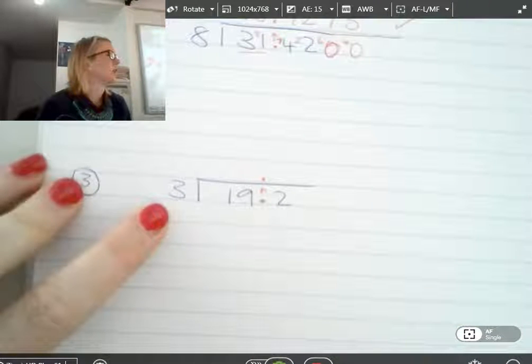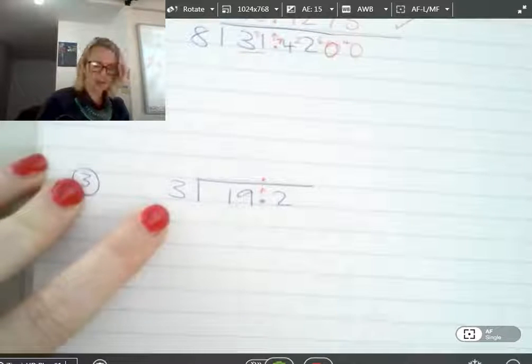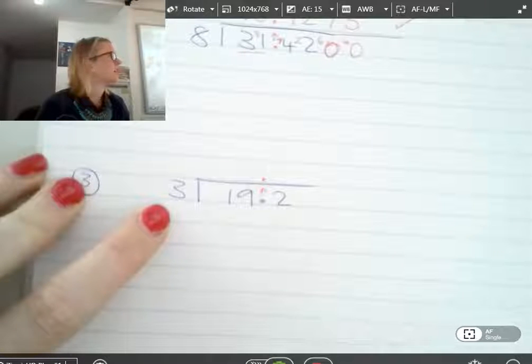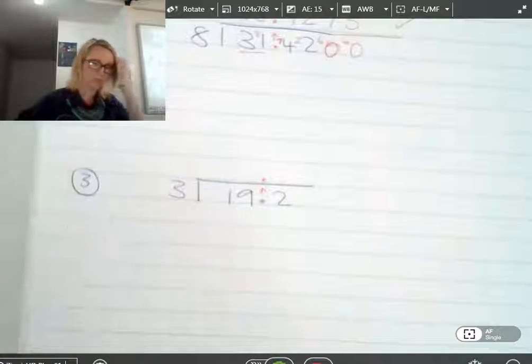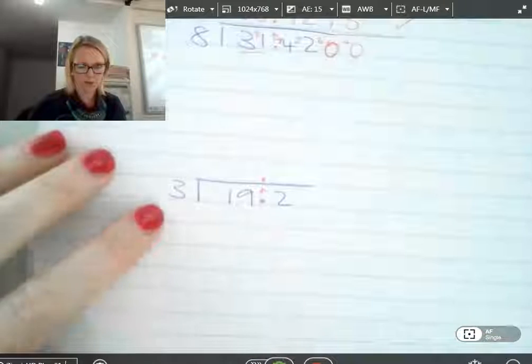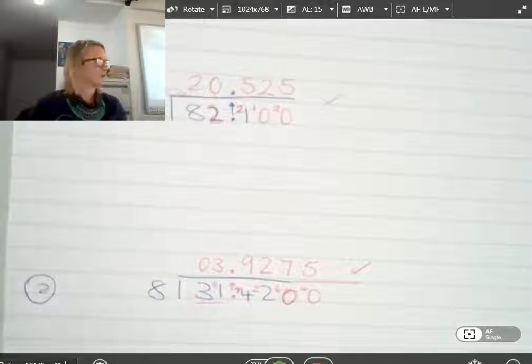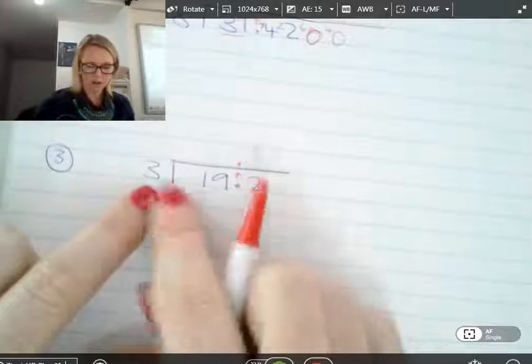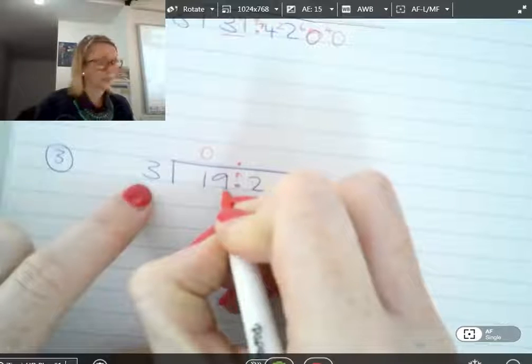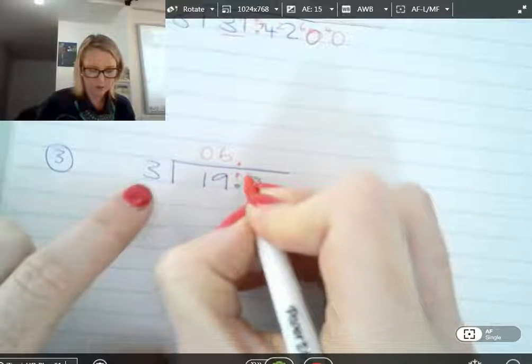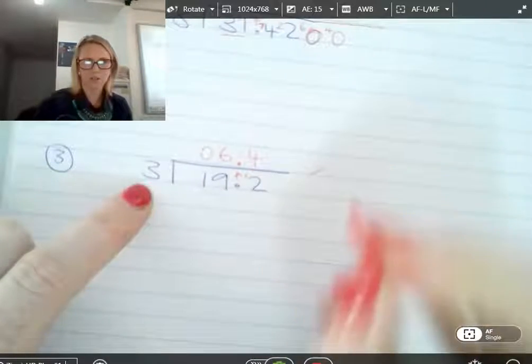3 into 19 should be around about what as an answer? What should it be close to? Jacob? 3 8s are 24, are they? So it might be a bit smaller. 3 6s are 18. So it should be around 6, maybe a little bit more because our answer is a little bit more than 18. The answer of the top one. 20.525. So 3 into 1 goes 0. 3 into 19. As we said, 3 6s gives us 18. So 6. I've got 1 left over. 3 into 12. 4. Any left over? No. Super. So we're finished.